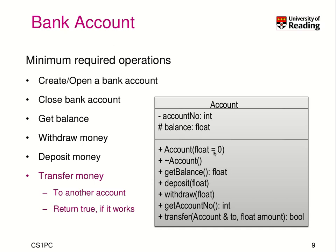The constructor may be able to specify how much money is initially deposited. getBalance returns a float. To withdraw, we may want to withdraw money — we give an argument for how much money we try to withdraw. We want to deposit additional money. And most importantly, we want to transfer money between two bank accounts. This can be done by specifying another account as the destination using call by reference, and an amount of money. This function can return true if it works, otherwise it should return false.